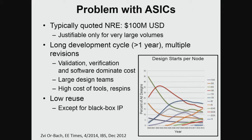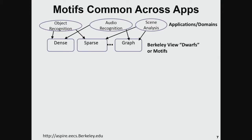Processors are in trouble, ASICs are in trouble. What do we do? The approach we have been taking at Berkeley is to try to build domain-specific chips. In particular domains, there are recurring applications. For example, object recognition will often rely on dense or sparse matrix multiplication. Audio recognition tends to use dense matrix manipulations and graph processing. Scene analysis also has these basic primitives — what are called Berkeley dwarfs, or nowadays called computational motifs.